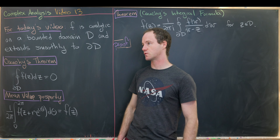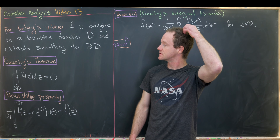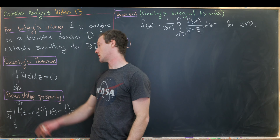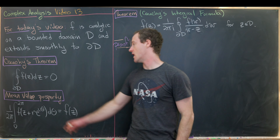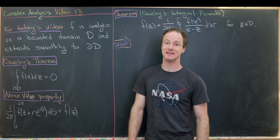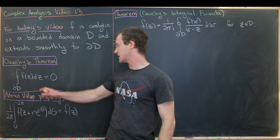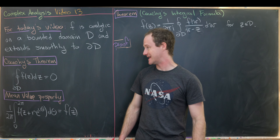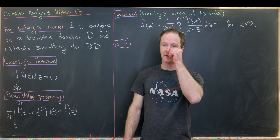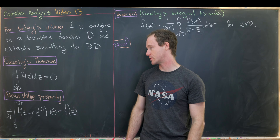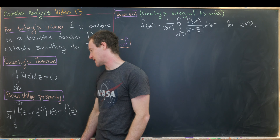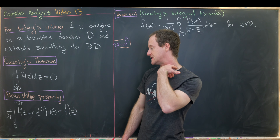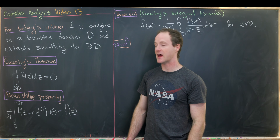I'd like to recall a couple of results from previous videos. The first is Cauchy's Theorem, which says that the integral along the boundary of D of f(z) dz equals zero — any integral of an analytic function around the boundary of a region where it is analytic is zero. Another result is the Mean Value Property, which says that (1/2π) times the integral from 0 to 2π of f(z + re^{iθ}) dθ equals f(z), where r is chosen so that z + re^{iθ} is inside D.